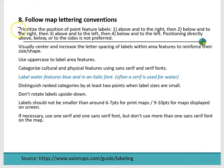So here are some conventions. You want to prioritize the position of point label features: above right is best. Typically if you have a dot representing a city, the best place to put the label is above it and to the right. Then the next best place is below and to the right, then above and to the left, and then below to the left. We'll talk in more detail about these.